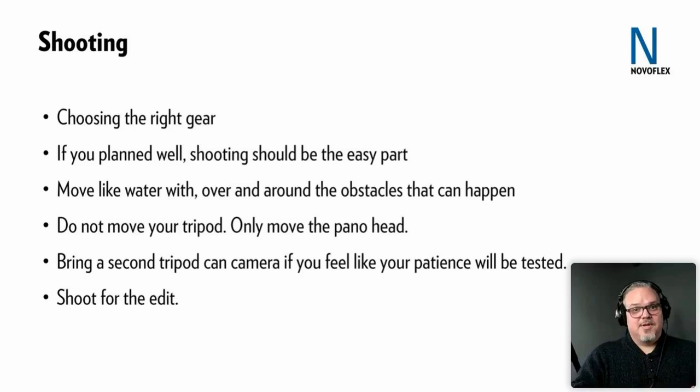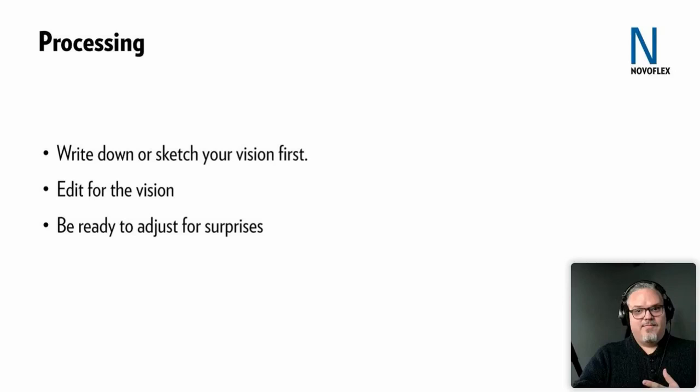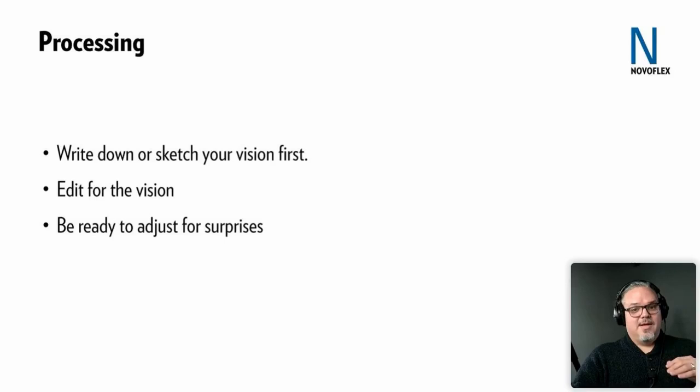Processing. I did go into detail on my process in the video. Before you start processing, it's good to write down some notes or sketch out your vision first so you have a goal. You can look at the notes you had from the shoot and say, I want to try to do this. You might make two or three variations that don't match that goal, but it's nice to have it first. Editing for that vision helps you get through the work, and you should also be ready to adjust for surprises.